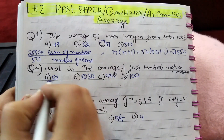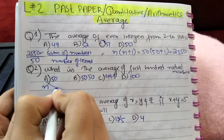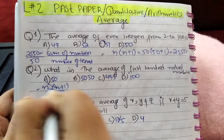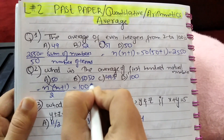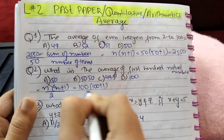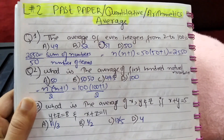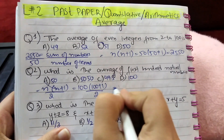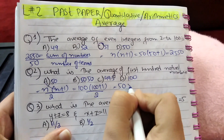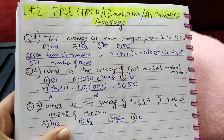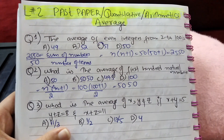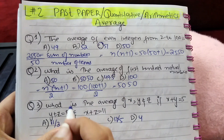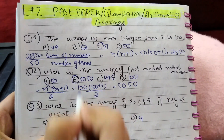Whenever such a series of natural numbers is given, the sum is always calculated using the formula n(n+1)/2, where n is 100. So 100 plus 1 is 101, and 101 multiplied by 100 divided by 2 results in 5050. The average of natural numbers is calculated using this formula, so option B is the correct one.